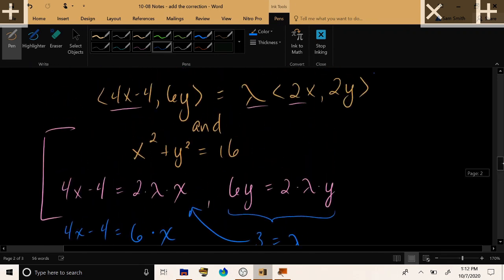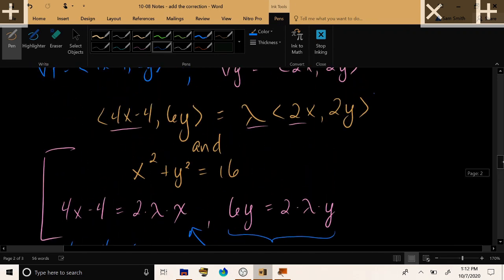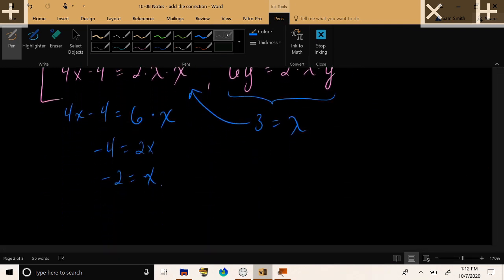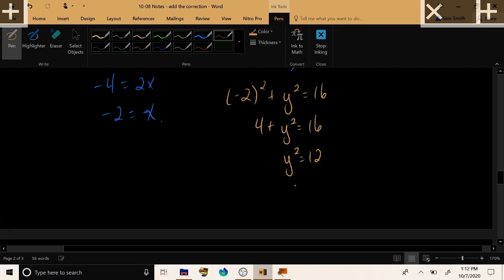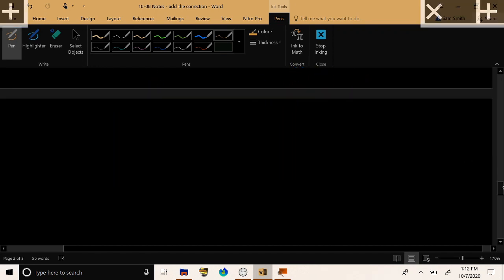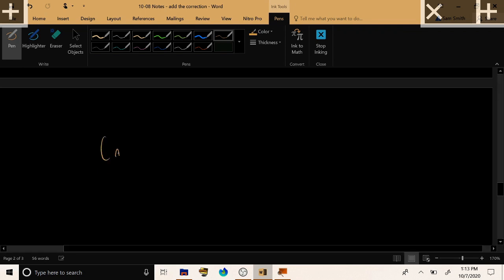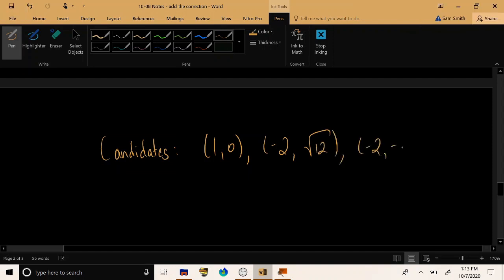Okay, now to find y, let's use the only equation that we have not used yet from our system. And that's x squared plus y squared equals 16. So, turning that into negative 2 squared plus y squared equals 16. We get 4 plus y squared equals 16. Y squared equals 12. Or, y is equal to plus or minus the square root of 12. Now, what have we obtained? We have obtained 3 points at which it is possible for our function to attain its maximum or minimum value. We have candidates 1, 0, negative 2, root 12, and negative 2, negative root 12.